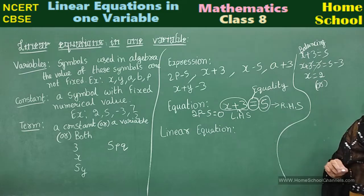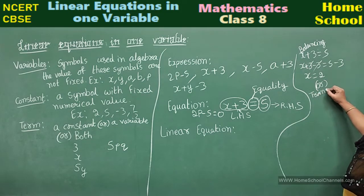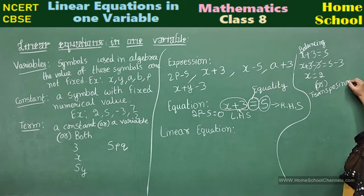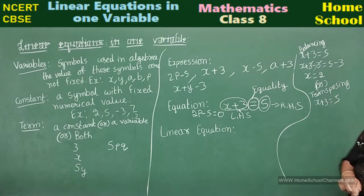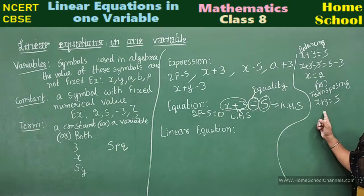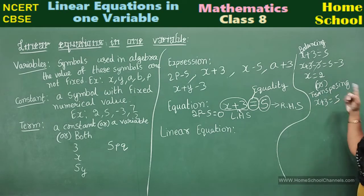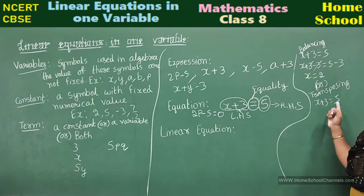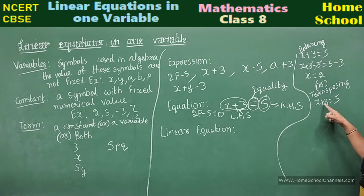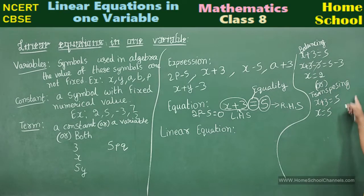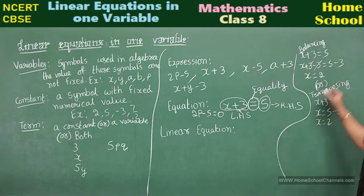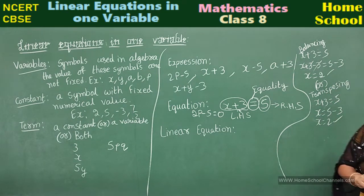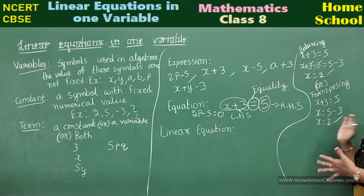Another method is transposing. For x plus 3 equal to 5 — other than the variable, transpose the number to the other side, and the sign changes. So x equals 5 minus 3, which is 2. Both methods give the same answer.